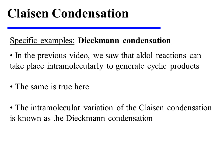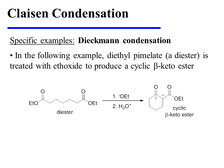Just as aldol reactions can take place intramolecularly to generate cyclic products, the same is true for the Claisen condensation. The intramolecular variation is known as the Dieckmann condensation. In the following example, diethylpimelate, a diester, is treated with ethoxide to produce a cyclic beta-ketoester through the Dieckmann condensation.